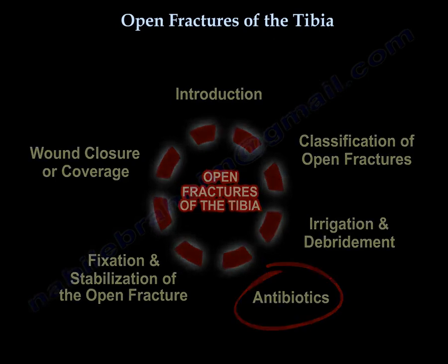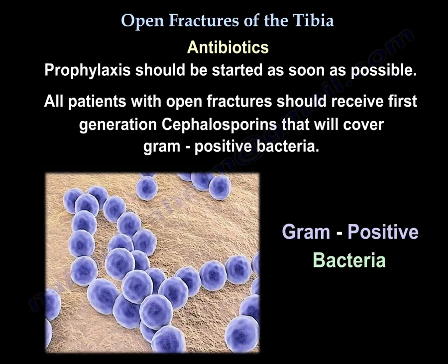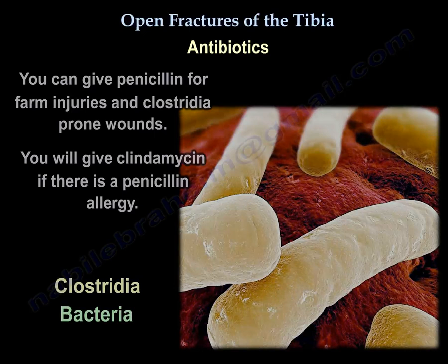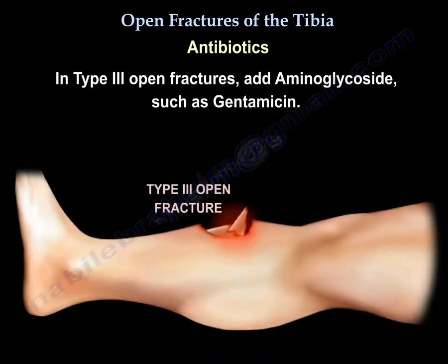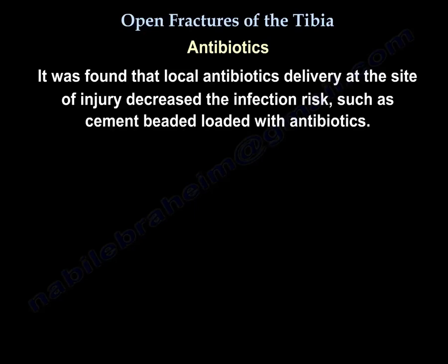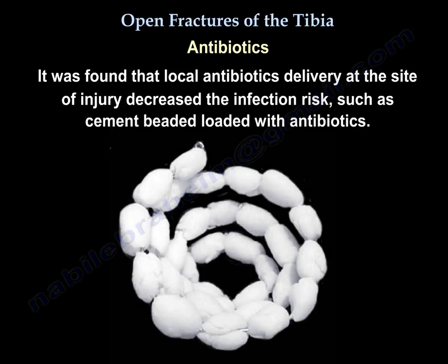Antibiotics: Prophylaxis should start as soon as possible. All patients with open fractures should receive a first-generation cephalosporin to cover gram-positive bacteria. Penicillin can be added for farm injuries and clostridium-prone wounds. Clindamycin is used if there is penicillin allergy. In Type 3 open fractures, add aminoglycosides such as gentamicin. Local antibiotic delivery at the site of injury — such as cement beads loaded with antibiotics — has been shown to decrease infection risk.